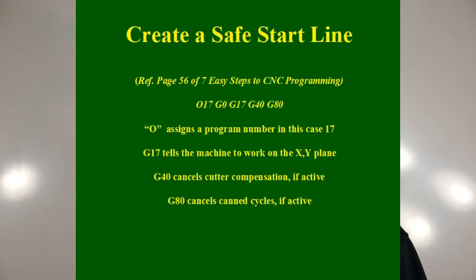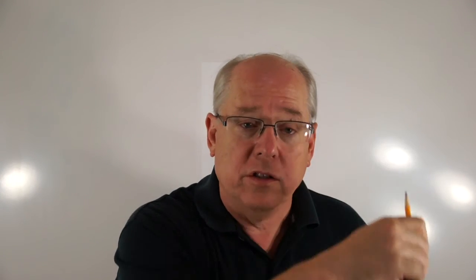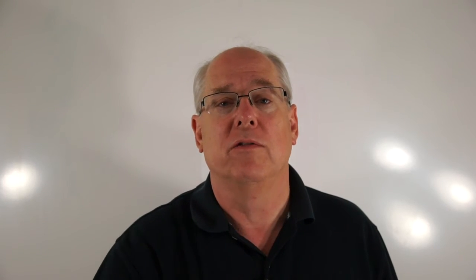The last code I put in is G80, which cancels any canned cycles that might have been running. This isn't typically necessary because a G00 usually cancels a G80 anyway, but it's habit — I just want to be safe and predict what's going to happen. Because if you don't cancel the canned cycle and you send the machine to a new XYZ location, the first thing it does when it gets there is execute whatever that last canned cycle was — drilling a hole or tapping a hole. So part of my startup block is always to cancel any active canned cycles.